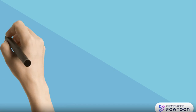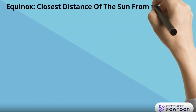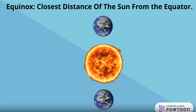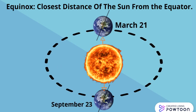Now I will tell you about equinox. Equinox is the closest distance of the sun from the equator. As you can see in the figure, it occurs on two days in a year, that is on March 21 and September 23.